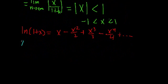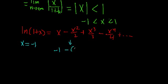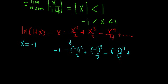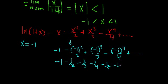Let's start with x equal to negative 1. We get the series: negative 1 minus negative 1 squared over 2, plus negative 1 cubed over 3, minus negative 1 to the 4th over 4, and so on. Simplifying: negative 1 squared is positive, so we get minus 1 half; negative 1 cubed is negative, so minus 1 third; then minus 1 fourth, minus 1 fifth, minus 1 sixth, and so on.